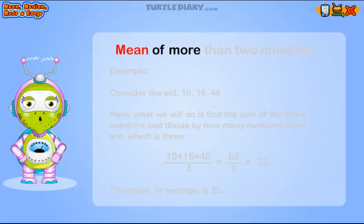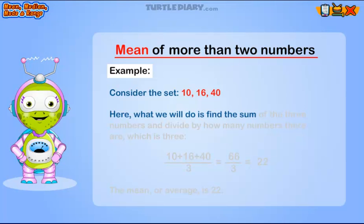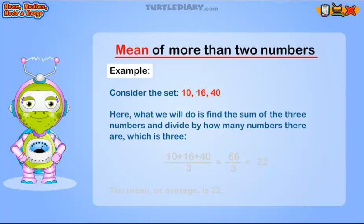Mean of more than two numbers. Here, what we will do is find the sum of the three numbers and divide by how many numbers there are, which is three. Ten plus sixteen plus forty over three equals sixty-six over three equals twenty-two.